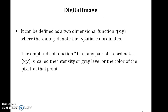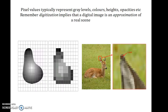It can be defined as a two-dimensional function f(x, y), where x and y denote the spatial coordinates and f indicates the amplitude of the coordinates x, y, and is called the intensity, or the gray level, or the color of the pixel at that point. Pixel values represent gray levels, colors, heights, and opacities.